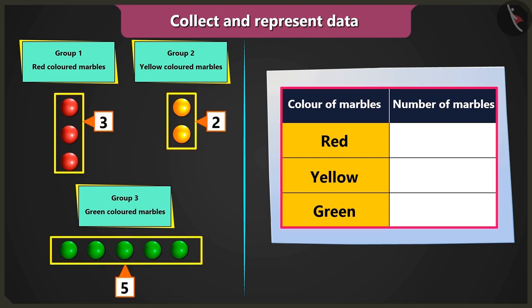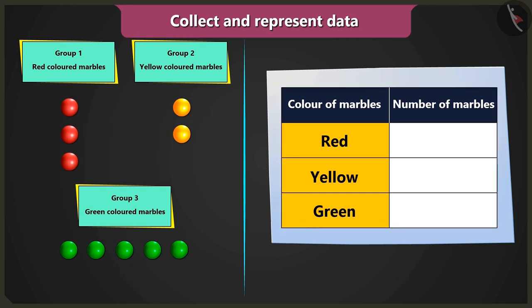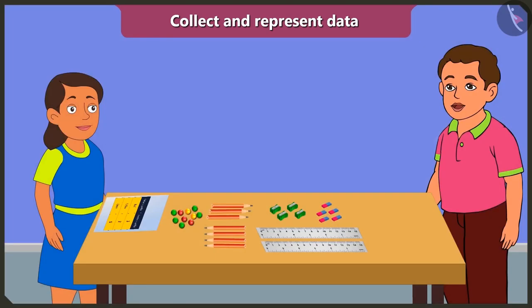Now we have to write these numbers in the table. Yes. Now in the column count of marbles, we will write three beside red color, two beside yellow color, and five beside green color. Well done, Bubbly. You represented the data very well.